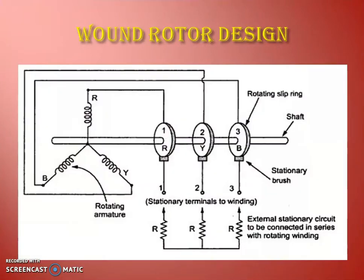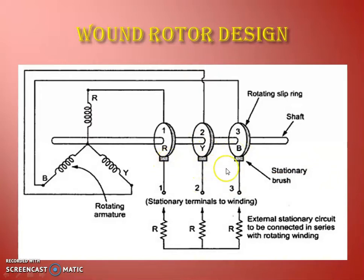The rotor winding is normally connected in star. One end is connected at the star point and the three windings are taken outside and connected to the slip rings — three slip rings. On the other side, brushes are connected and external resistance can be connected to the slip rings and through the slip ring it can be connected to the rotor winding.